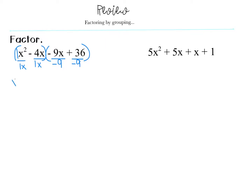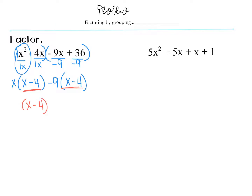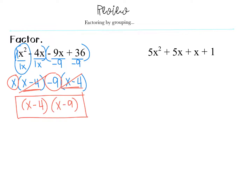So once I do that, I take an x out of the first one: x squared divided by x leaves me with just x, and negative four x divided by one x leaves me with negative four. Then I took a negative nine out of the second one, and what's left is negative nine divided by negative nine is just a one x, and positive thirty-six divided by negative nine leaves me with a negative four. They now share an x minus four, so what's left is x minus nine. That is my factored answer.